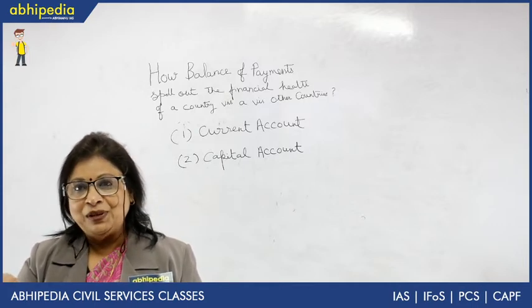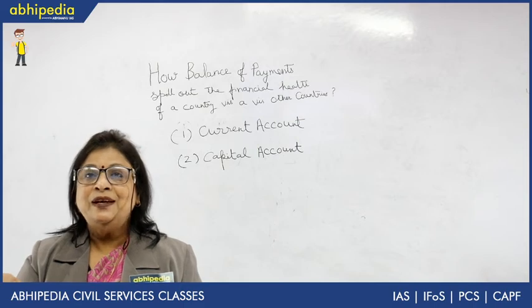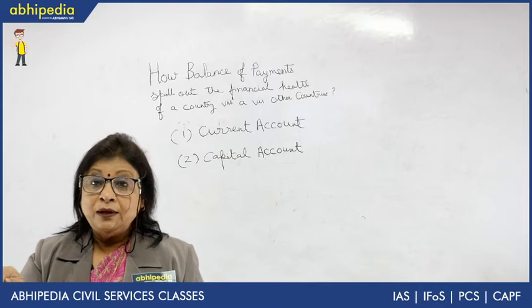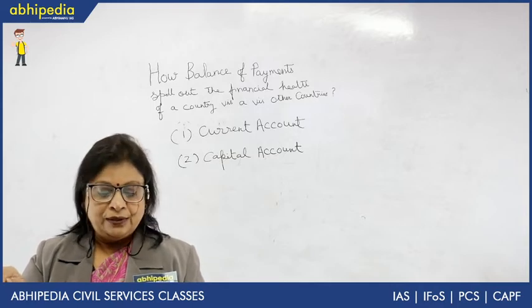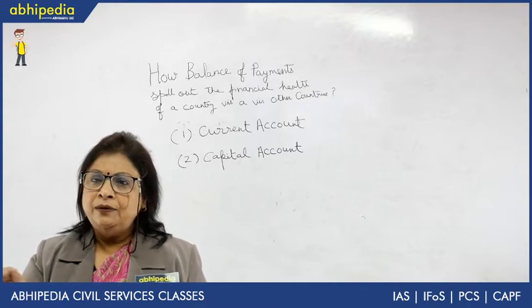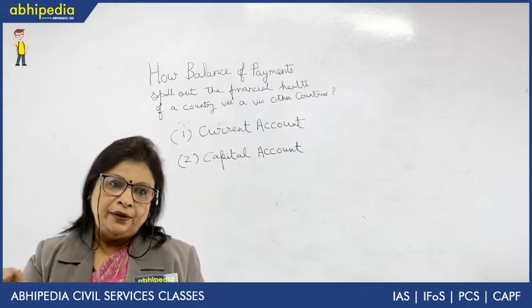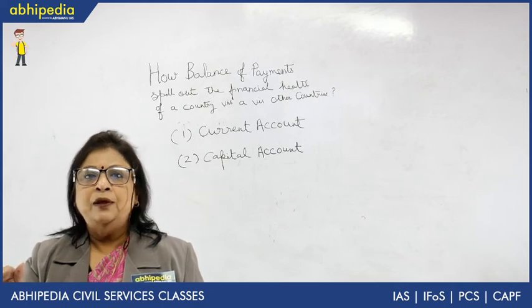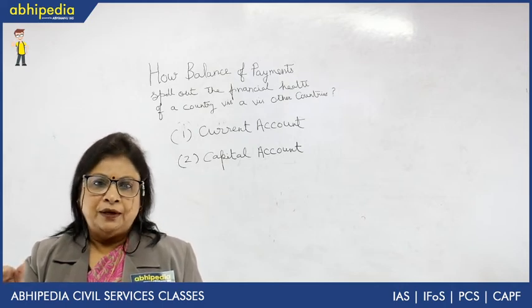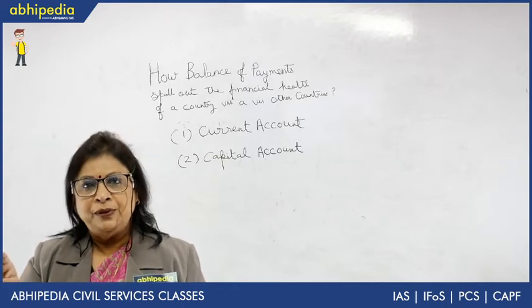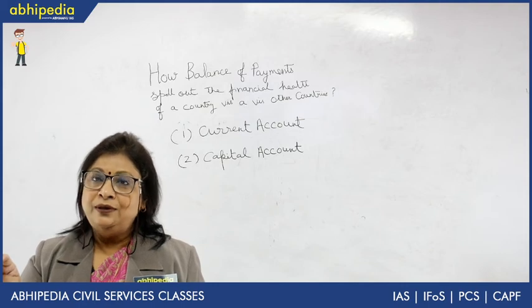To summarize: the first part of current account is visible items — material goods. The second is invisible items — services. The third part of the current account is unilateral transfer — a one-way transfer where we do not expect anything in return. It could be a donation from one country to another, any kind of gift, or exchanges when dignitaries visit countries. So there are three parts of current account: visible, invisible, and unilateral transfer.